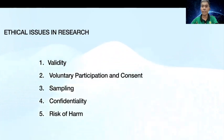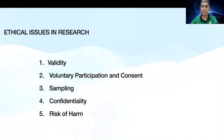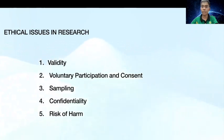The third ethics principle of the Economic and Research Council states that the confidentiality of the information supplied by research subjects and the anonymity of respondents must be respected. However, sometimes confidentiality is limited. For example, if a participant is at risk of harm, then we must protect them. This might require releasing confidential information.